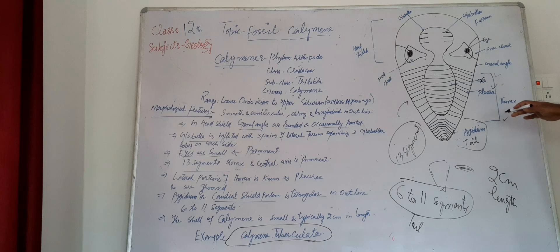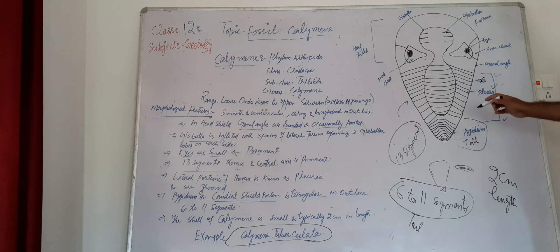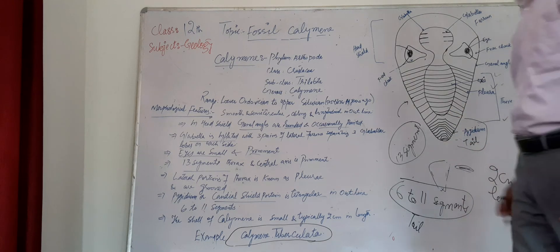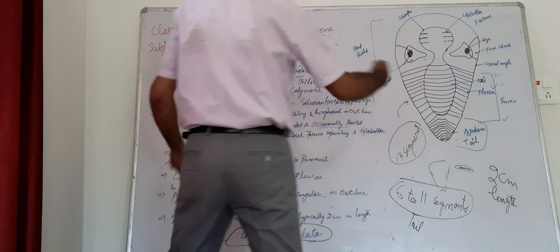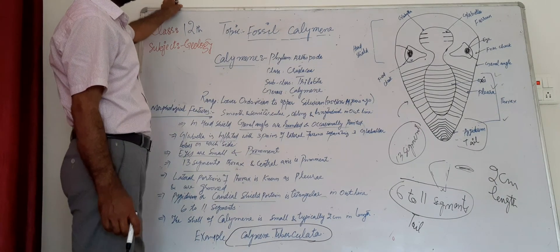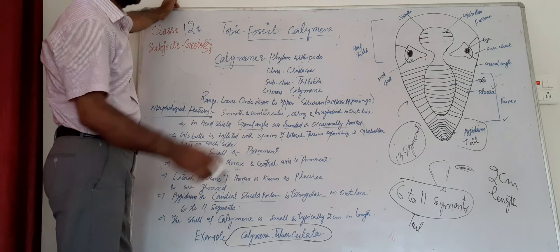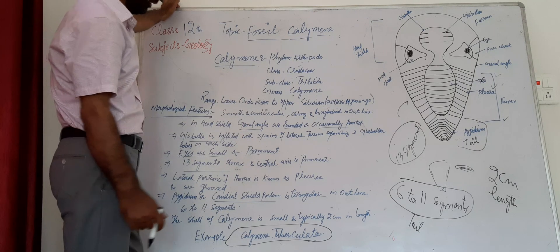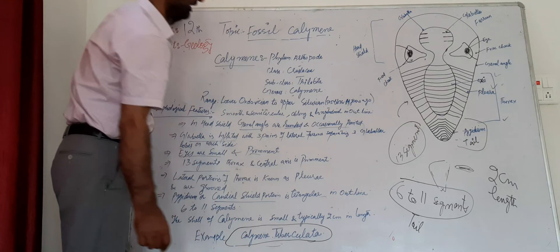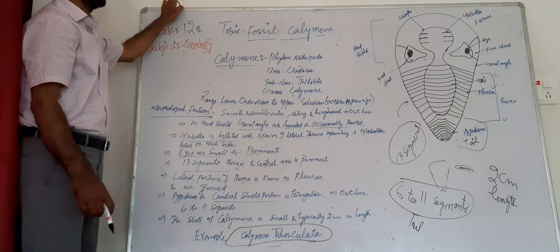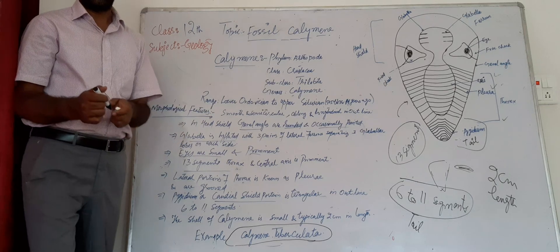پوری شیل کی لمبائی تقریباً دو سینٹی میٹر ہوتی ہے — کیلیمین ٹائپ کے جانور دو سینٹی میٹر کے ہوتے ہیں۔ اس کی مثال کیلیمین ٹیوبیرکیولیٹا ہے۔ So this was all about the fossil Calymene, which belongs to the subclass Trilobita.